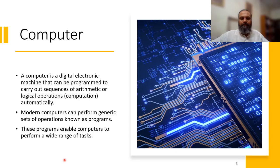A computer is a digital electronic machine that can be programmed to carry out sequences of arithmetic or logical operations — we call these computations. By digital we mean the electronic device which works on digital signals. A digital signal is in the form of electric pulses, or in the form of zeros and ones.